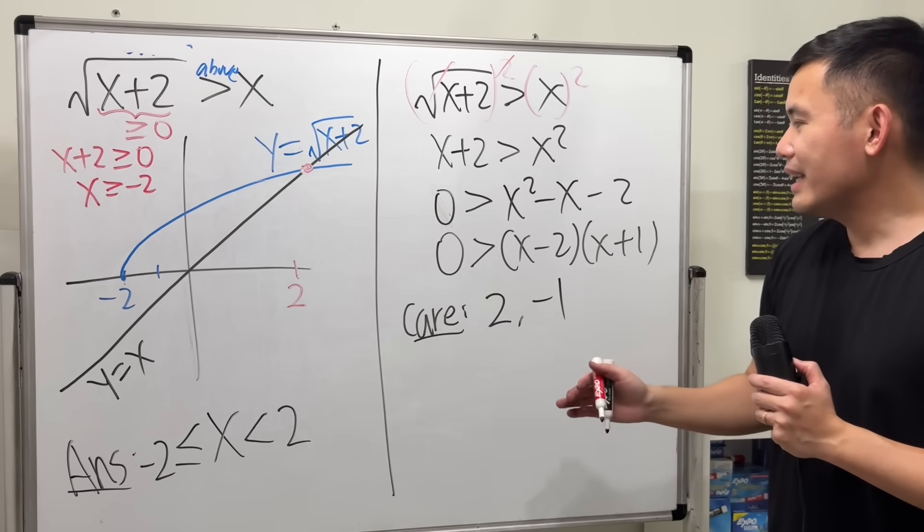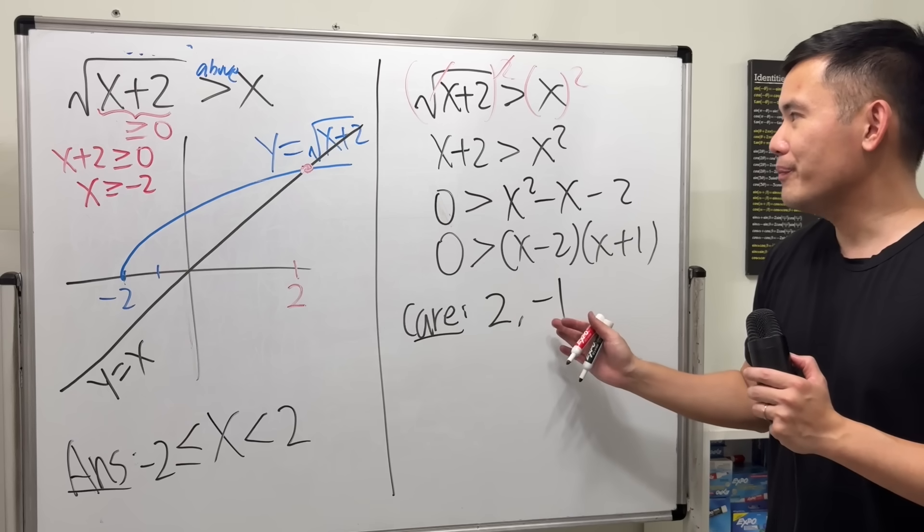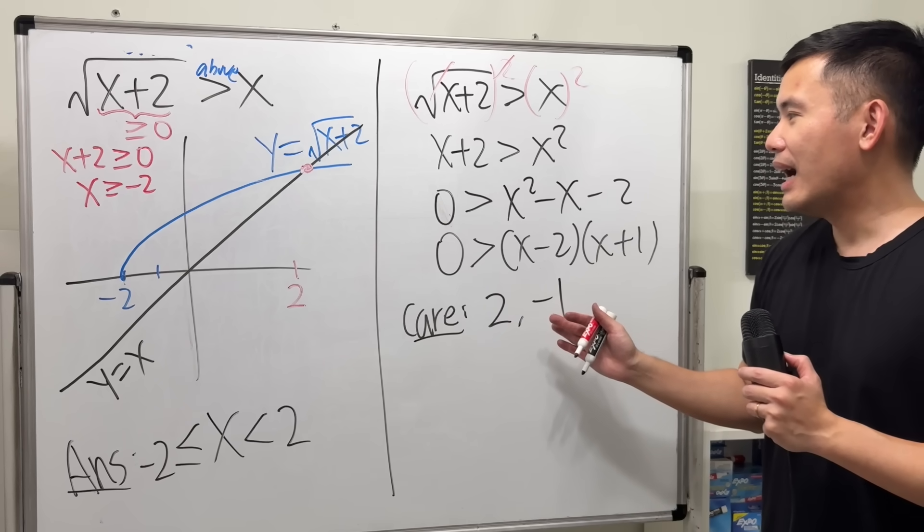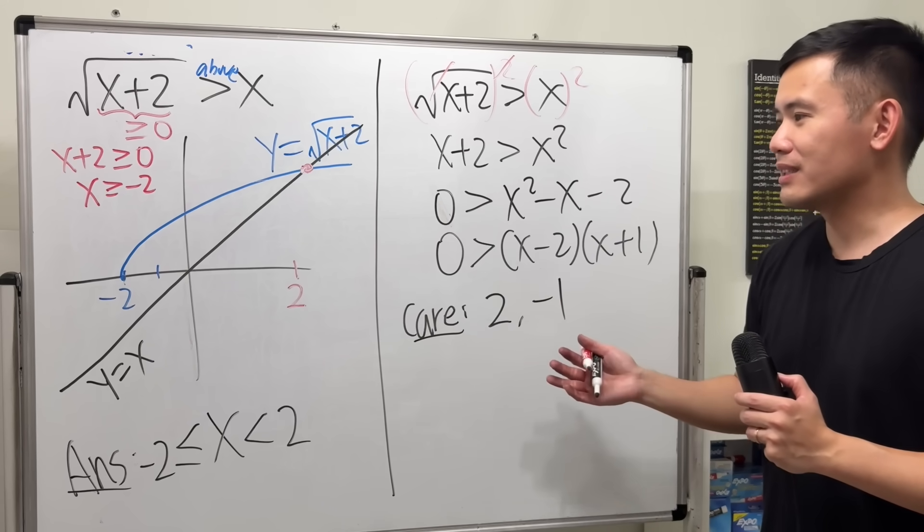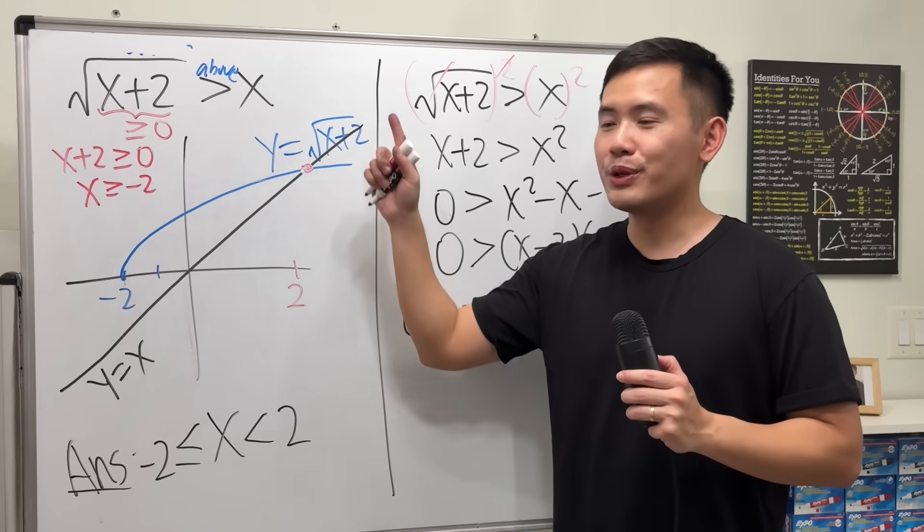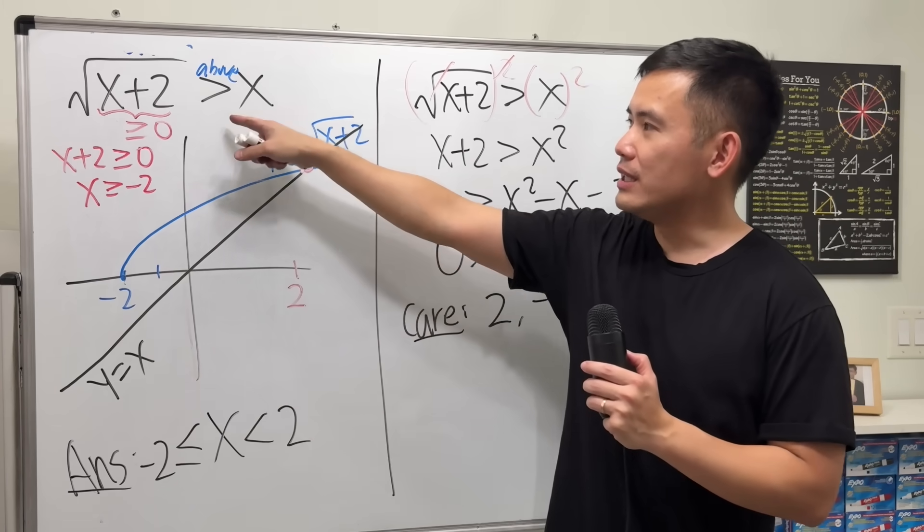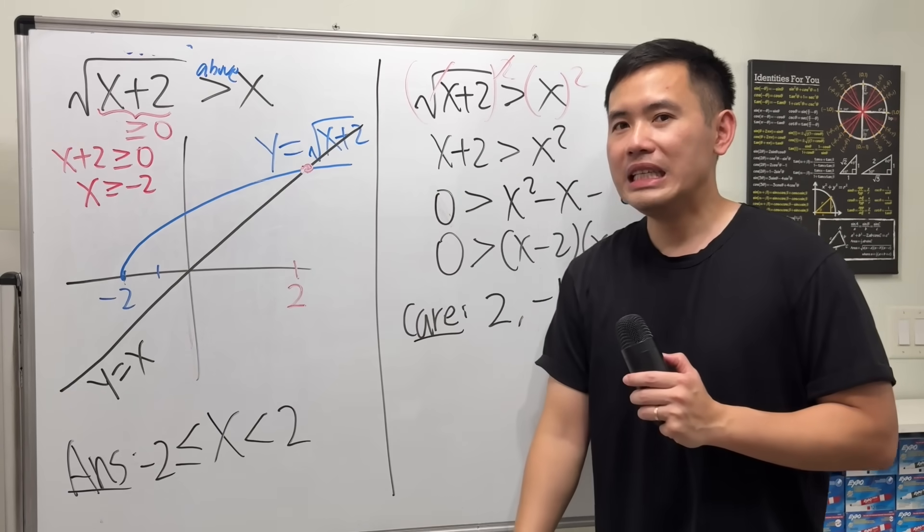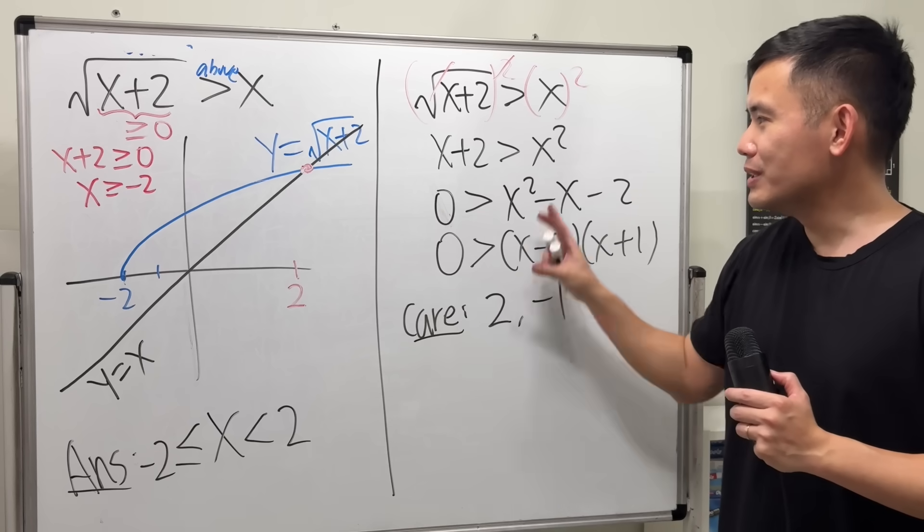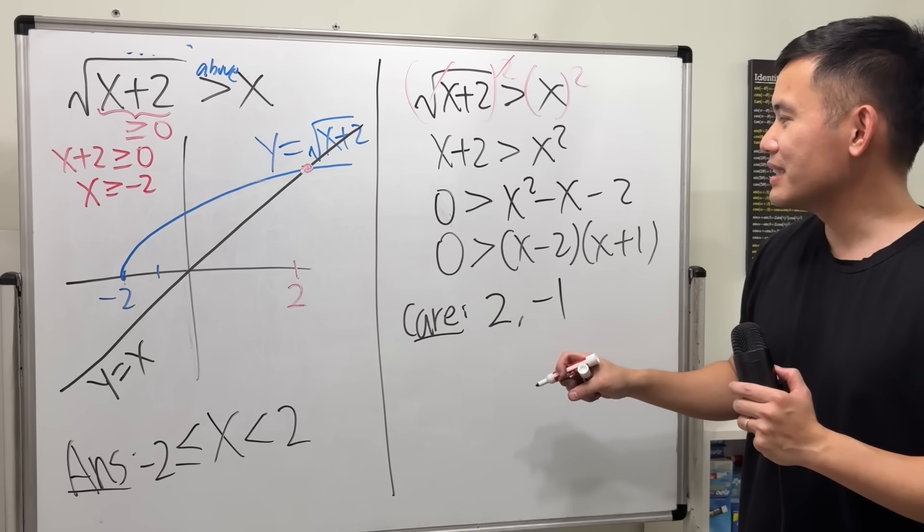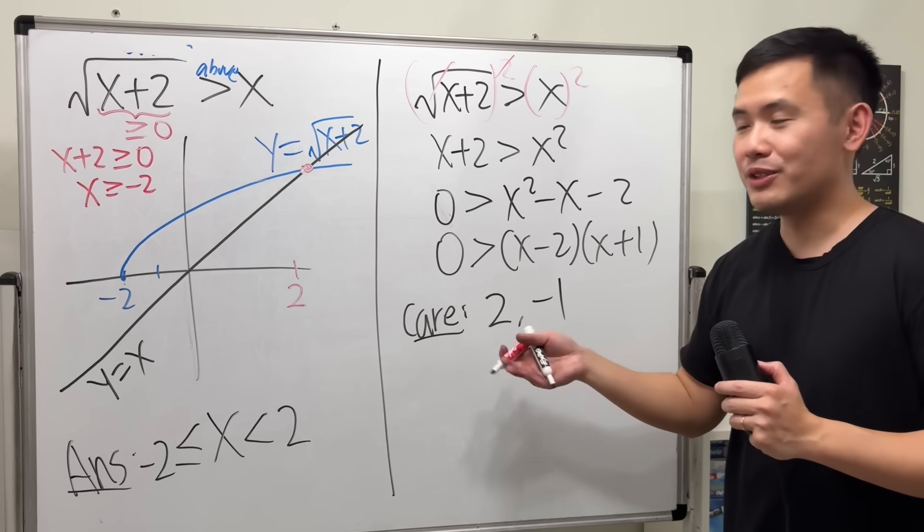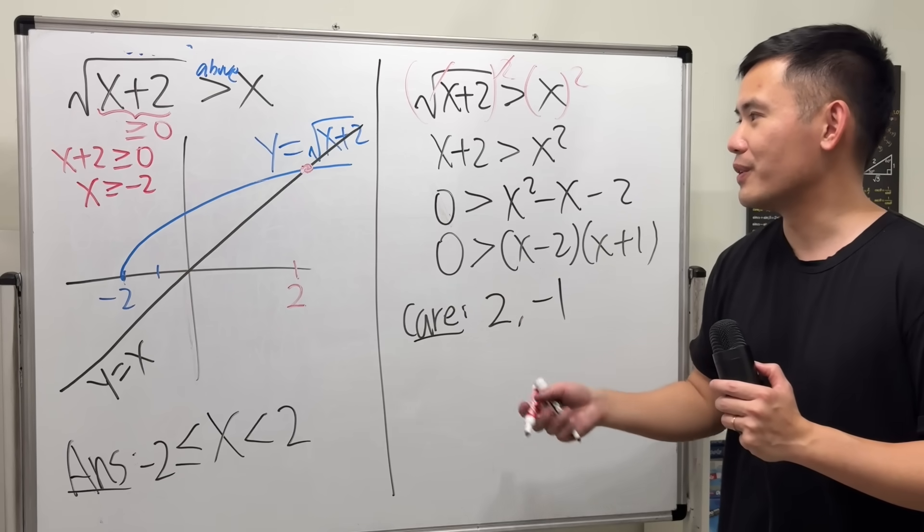Alright? And then, right here, I don't think this is like the best way. If possible, try to just use the graph to solve inequalities with square roots. If not, then once you get the answers, pay more attention, be more careful for that.